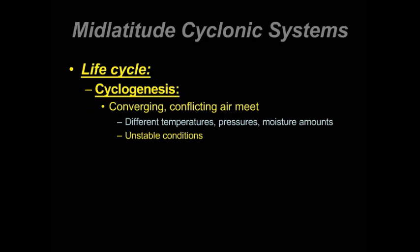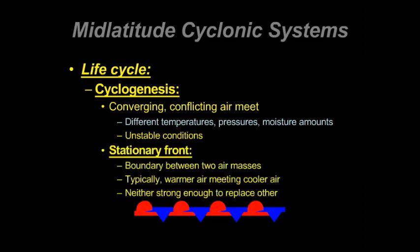The beginnings of a mid-latitude cyclonic system, or cyclogenesis, occurs when converging and conflicting air meet. What do I mean by conflicting air? Air that has different temperature, pressure, and moisture characteristics. This is going to bring unstable conditions. When we showcase this on a map, we illustrate it as a stationary front — a boundary between two air masses that have different characteristics.